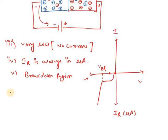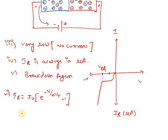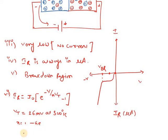Coming to the current equation: the reverse current IR equals I₀ multiplied by (e raised to −V divided by η·VT) minus 1. In forward bias it was a positive exponent; here it is negative. The applied potential is V, η equals 1 for germanium and 2 for silicon, and the thermal voltage VT equals 26 millivolts at 300 Kelvin. This is all about reverse biased p-n junction diode.